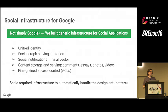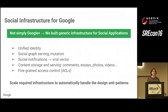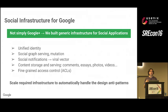You may be asking whether at Google, social infrastructure was really just about Google Plus. The answer is a resounding no. One of the goals of Google Plus was actually to build a set of infrastructure that could be used to make any and all Google applications social. We built generic infrastructure to solve problems like unifying identity and social graph serving, handling a high mutation rate on a graph, social notifications, content storage for social systems, and fine-grained access control — and we're talking about serving millions, hundreds of millions of users.